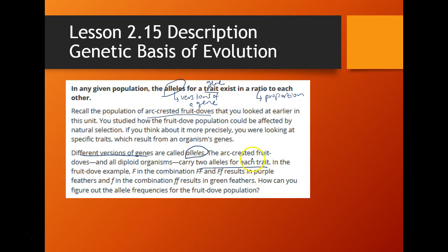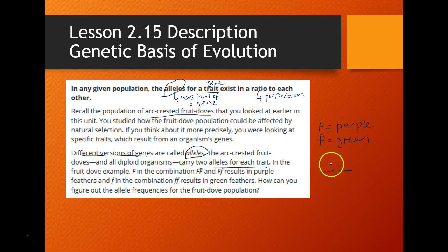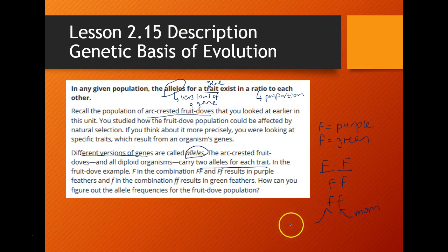We were looking at specific traits and specific genes — specifically feather color. Remember, alleles are different versions of one particular gene, and each individual carries two alleles for every single trait. For example, for feathers, big F represents purple and little f represents green. Each individual has two alleles for that trait: two big F's, one big F and one little f, or two little f's — one from mom and one from dad.